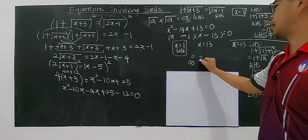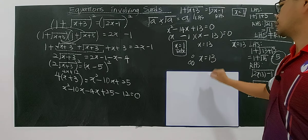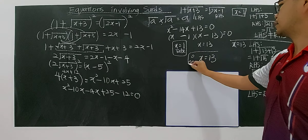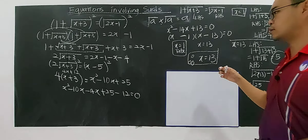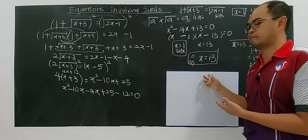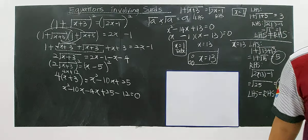Therefore, x equals 1 is rejected as a false solution, and the real solution is x equals 13. This is the difference between this example and the previous example.